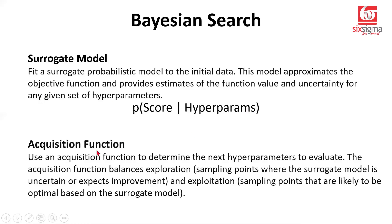The second step is the acquisition function, which determines the next hyperparameters to evaluate. Keeping in mind what it has learned through the surrogate model, it tries to explore newer hyperparameters. There are two approaches within the acquisition function: exploration, where you try something new, and exploitation, which refers to leveraging what you already know. There are complex algorithms behind both the model and the acquisition function, but the key idea is the intelligence built as you explore.